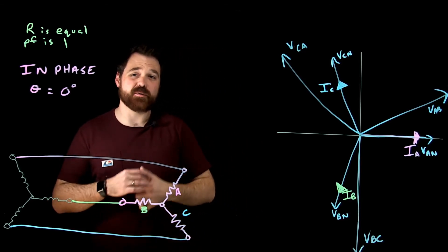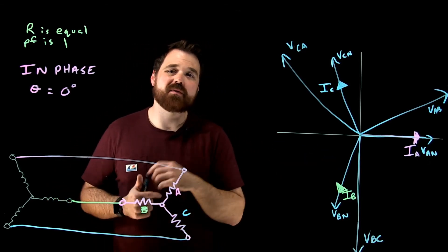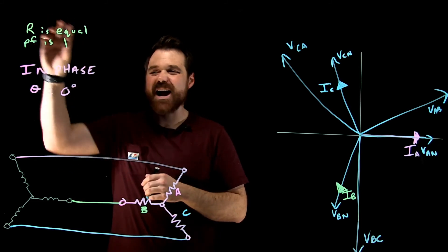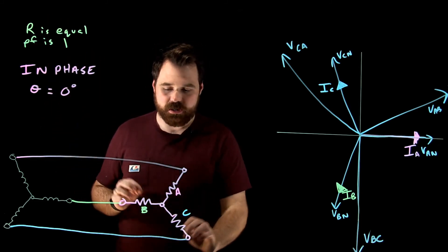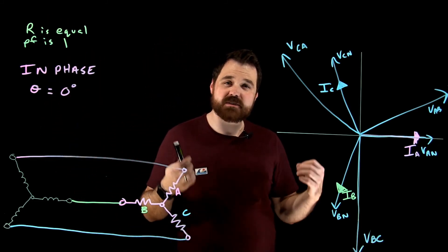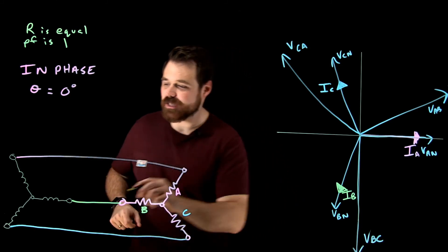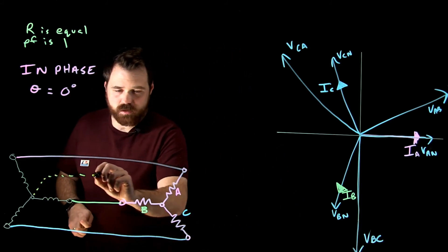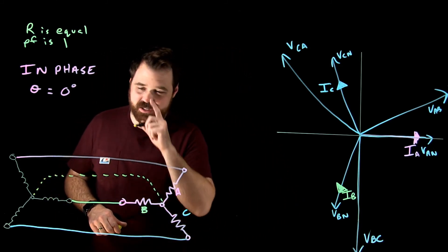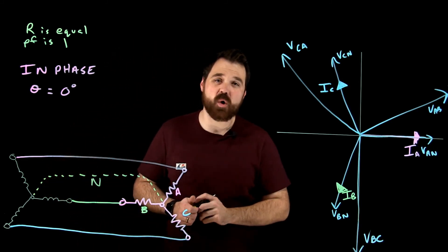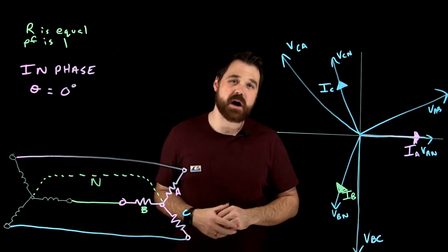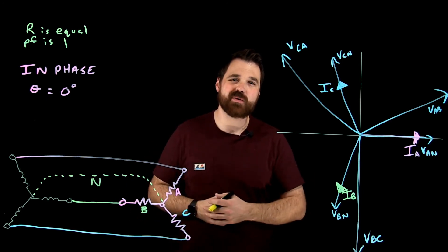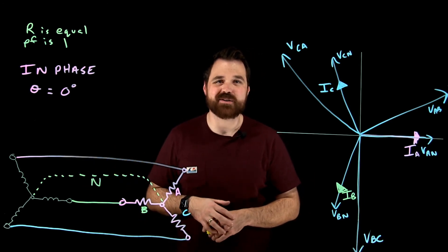So that's kind of what your phasor diagram would look like for a purely resistive balanced three-phase load. Now the big thing with that three phase balanced load is that because everything is balanced, there is no current going to be flowing on that neutral conductor. So in a balanced load, we're not going to see any current flowing back on that neutral.